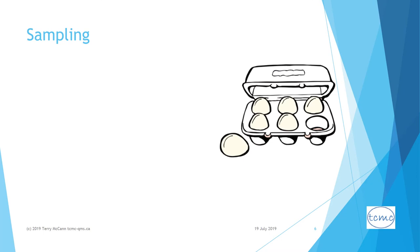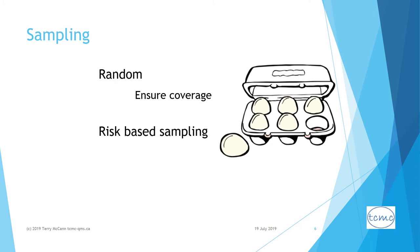You cannot audit every single operational thing that an organization does. Have a system of sampling. This could be random sampling where, for example, you throw dice for your starting point and then take every nth instance — every so many instances after that — to ensure a certain percentage coverage.